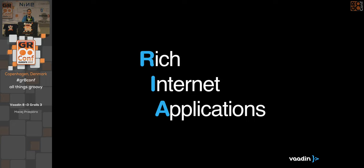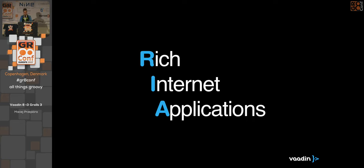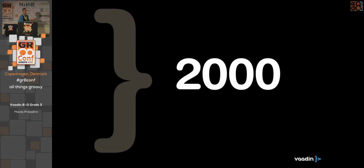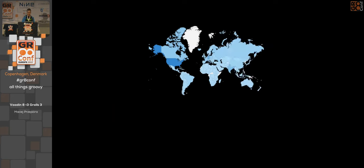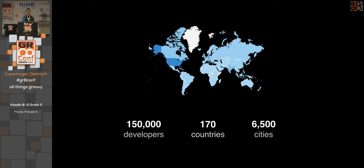Let's think about what rich internet applications are. The basic idea behind RIAs is that you can have an application that behaves a lot like a desktop application, but it runs in a browser. It allows you to build complex UIs, it doesn't reload on every user interaction, and so on. Development of Vaadin as a RIA framework started in 2000, and nowadays in 2017 we have something like 150,000 developers across 170 countries and 6,500 cities — quite a user base.